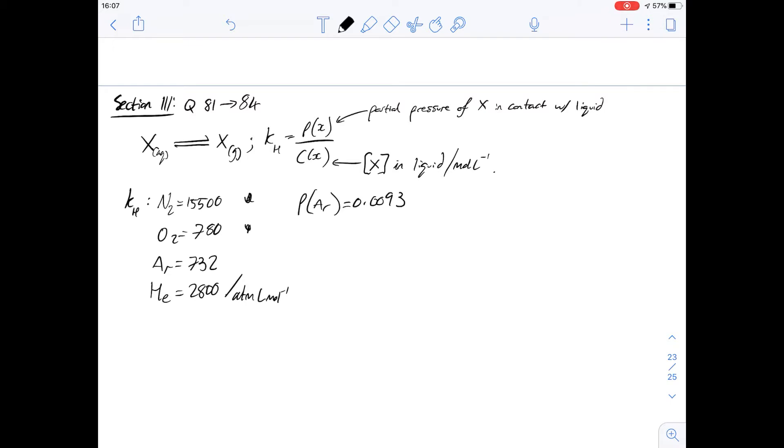And then that points us towards answer D, which says the higher partial pressure of nitrogen in air causes concentration in plasma to exceed the O2 concentration. And from the equation here that looks at what KH actually is, this supports this, because the higher the concentration of the gas in contact with the liquid, the higher the KH will be. So therefore we know the answer for number 81 has to be D just from the information that's given to us.